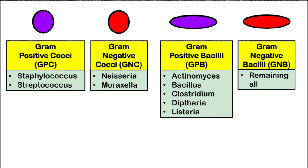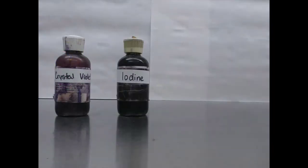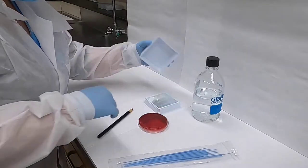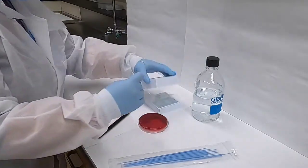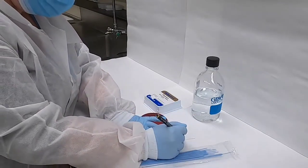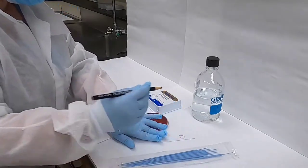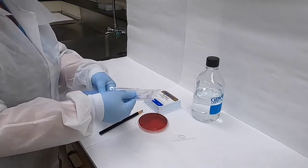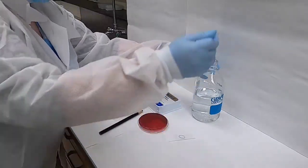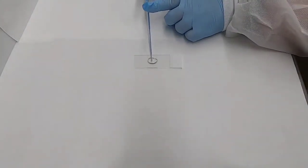We will now see the demonstration. Basic reagents required for a Gram stain: crystal violet and Gram's iodine for the primary stain, acetone for decolorization, and basic fuchsin or safranin for the secondary stain. The first step is to prepare the glass slide — remember to place your slide frosted side up. Draw a circle on the slide using a grease pencil, which helps contain the materials and orient yourself when visualizing under a microscope.